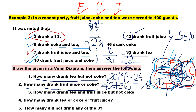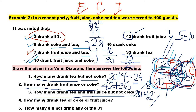Next: how many drank tea and fruit juice but not Coke? We exclude the Coke circle. So we consider 28 plus 4 for fruit juice, and 20 plus 4 for tea — but the 4 in the middle is already counted. So the answer is 28 plus 20 plus 4, which gives us 52.